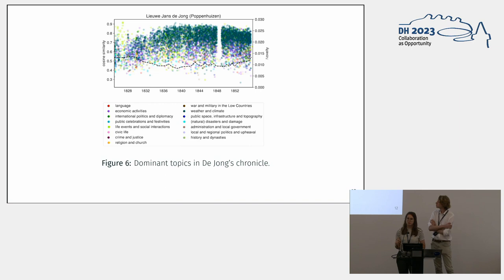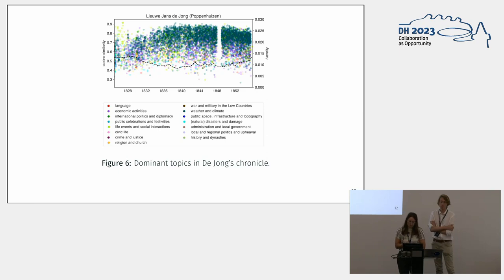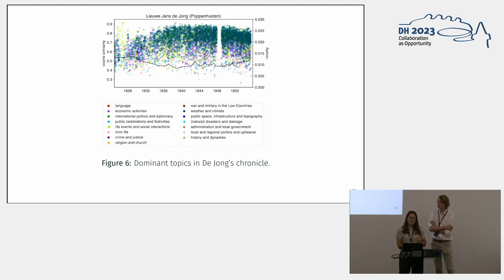For the other chronicler with the novelty flatline, you see one large cloud of dots in just a few colors, dominated by weather and climate topics, with light green for life events and social interactions. This is a farmer from a small Frisian village who mainly writes about the weather, and when he doesn't write about weather he writes about his children's birthdays — and since he has 14 children, there are many birthdays over 30 years. This chronicle doesn't change over time; there are no big events influencing him and it remains very stable.